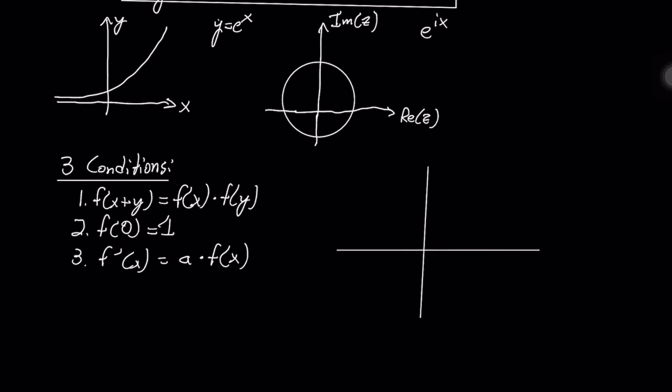So we can now apply this quickly to the complex plane. Let's do that here. So we have the real part of z and the imaginary part of z. We know from condition 2 that f of 0 equals 1, so we're starting out here at 1, 0. And this is the function f of x equals e to the ix.